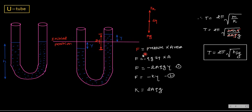For the free body diagram: the resultant restoring force and downward weight cause oscillation. F equals pressure times area; the pressure is ρg times 2y (the height difference is 2y), so F = ρg·2y·A. Therefore F = −2A·ρ·g·y. Comparing with F = −ky, we get k = 2A·ρ·g. The total mass of the liquid: density times volume, with total height 2h and area A, so m = ρ·A·2h = 2A·h·ρ.